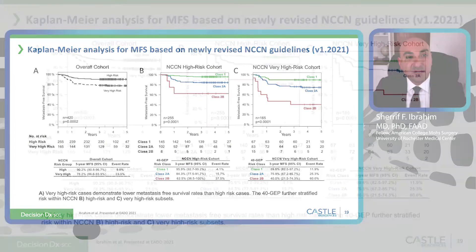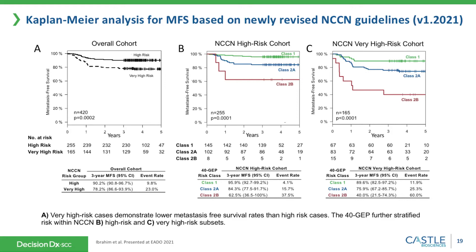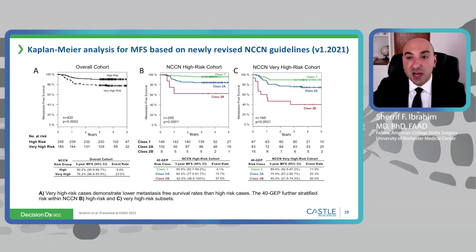Looking at Kaplan-Meier analysis based on the newly revised NCCN guidelines, we can separate the cohort into the high-risk NCCN group and the very high-risk NCCN group. We see a class 1 event rate of 4% in high risk and 11.9% in very high risk, and a 60% rate for class 2B patients within the NCCN very high-risk cohort. The very high-risk cases demonstrate lower metastasis-free survival, and the 40-gene GEP test further stratifies this risk, consistent across the newest NCCN guidelines.